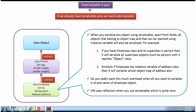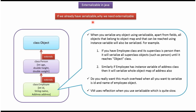In this video tutorial, I will cover why we need the Externalizable interface. We already have the Serializable interface, so why do we need to use Externalizable? Here you can see the Employee class — it has three fields: id, name, and address. This Employee class extends the Person class, which has age, height, and weight, and which extends the Object class.